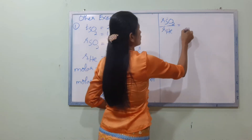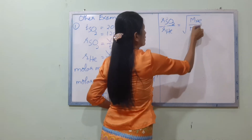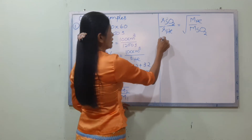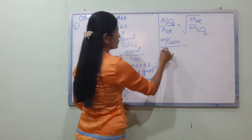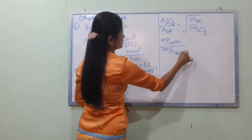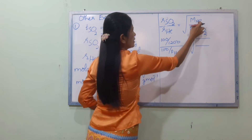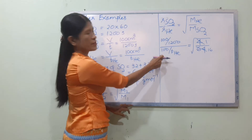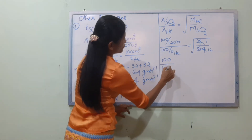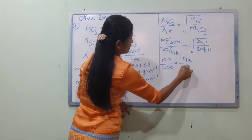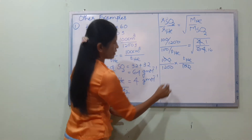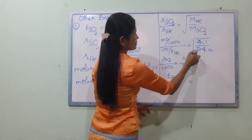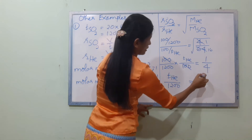R_SO2 by R_He equals the square root of M_He by M_SO2. Substituting: 100/1200 divided by 100/D_He equals the square root of 4 by 64, which simplifies to 1/16. Taking the square root gives 1/4.